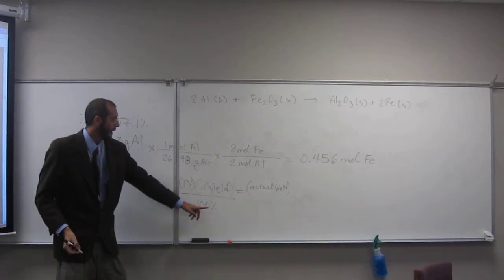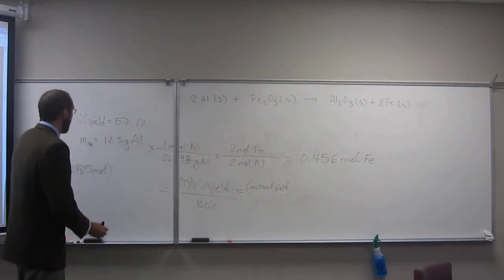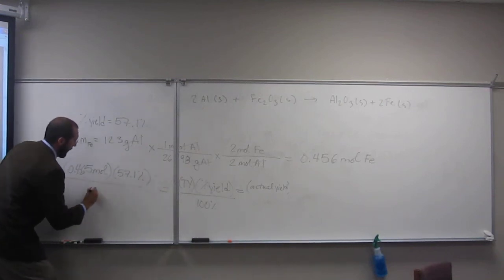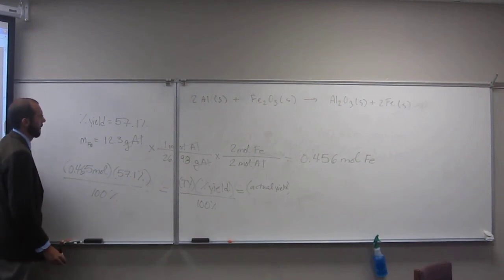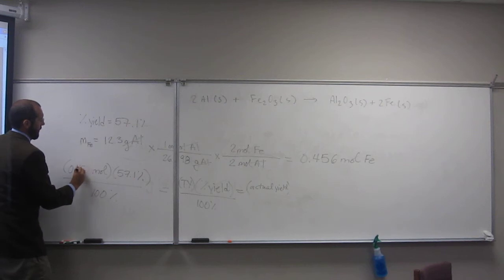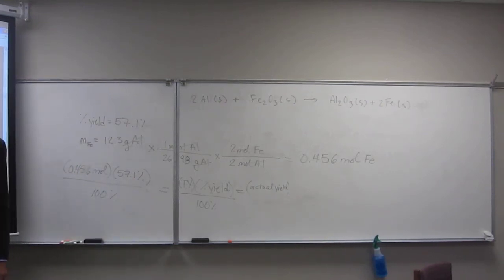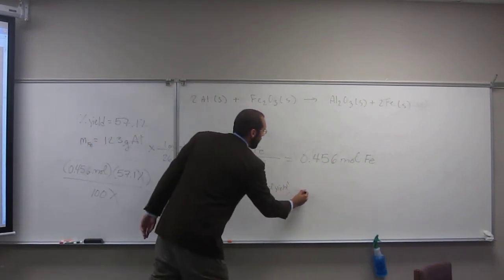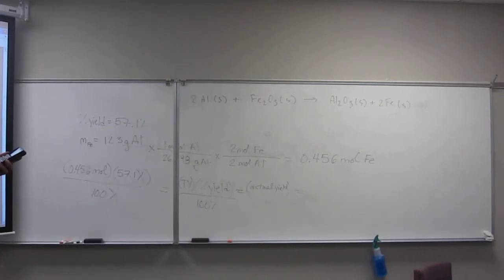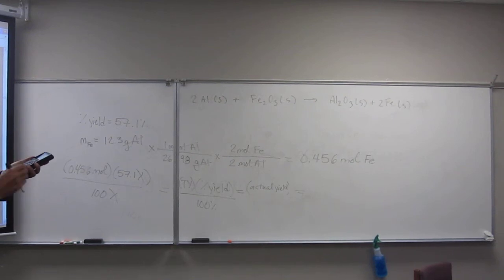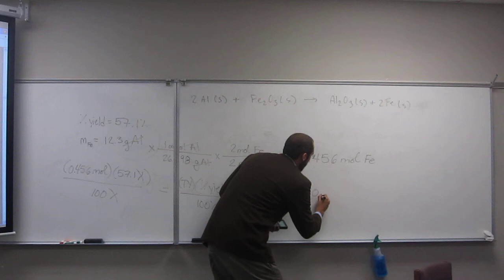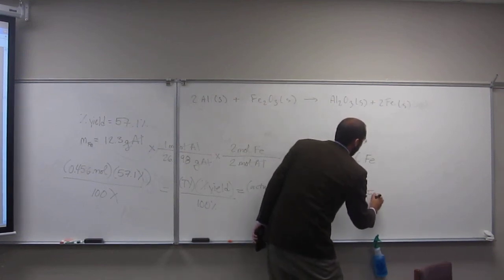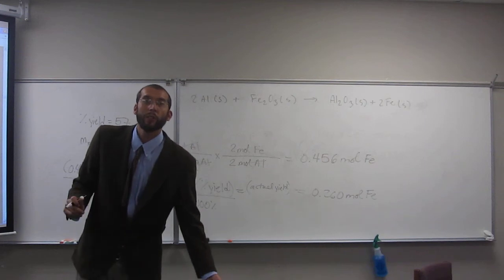The theoretical yield. Well, what is the units of that theoretical yield? Moles, right? So the actual yield we want in what also? Moles. Since this has 100% in there, then the percent has to be in there, right? So the percent yield was 57.1% divided by 100%, 0.456. And then cancel, cancel, like that. And that gives us the number of moles, which is times 57.1 divided by 100. 0.260 moles of iron is what we got, right? So that's the actual yield in moles.